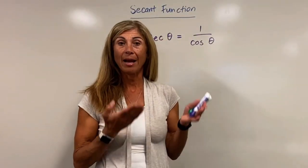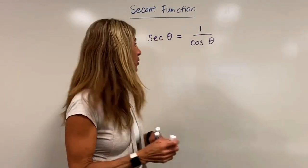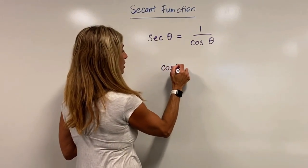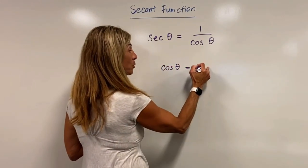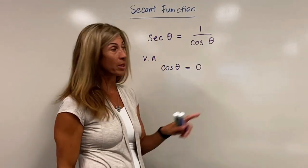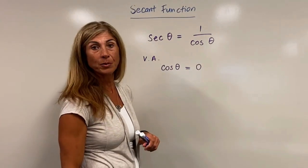So now that we've looked at our visual on Desmos, we know cosine of theta, because it's in the denominator, cannot equal 0. So we happen to have vertical asymptotes that are occurring when cosine theta equals 0.